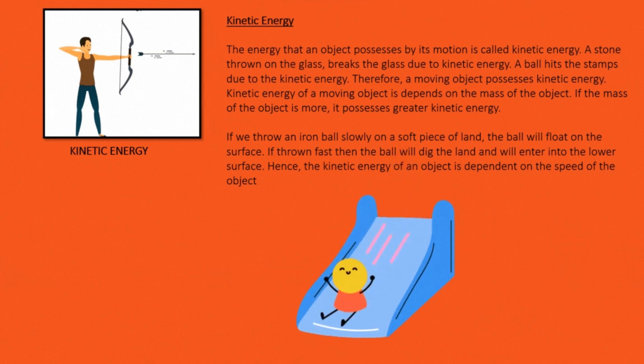If we throw an iron ball slowly on a soft piece of land, the ball will float on the surface. If thrown fast, then the ball will dig the land and will enter into the lower surface. Hence, the kinetic energy of an object is dependent on the speed of the object.